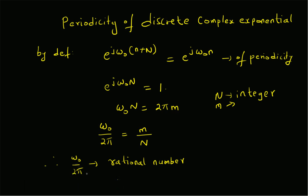If ω₀ = (m/N)·2π, then we can say that the discrete complex exponential e^(jω₀n) is periodic. To summarize, the periodicity of the discrete complex exponential can be analyzed as follows.